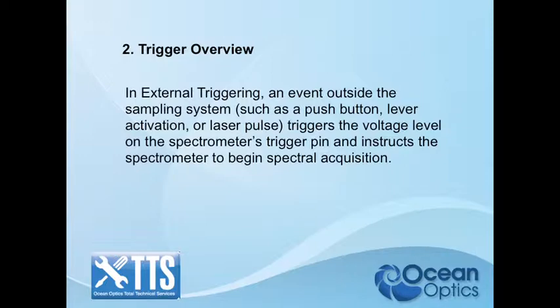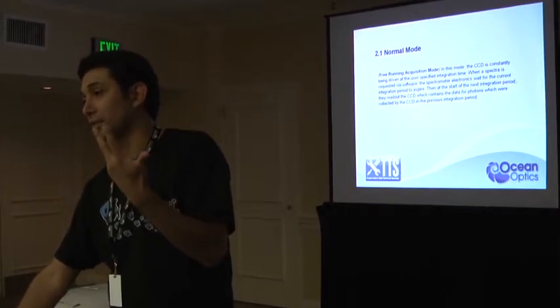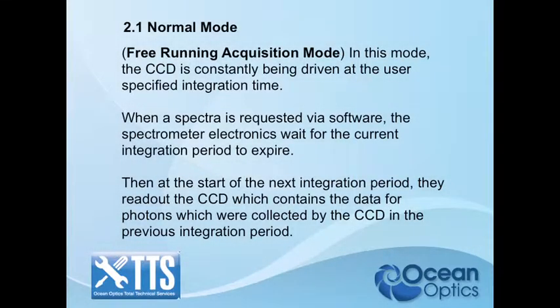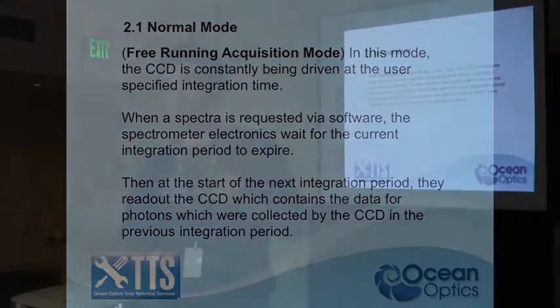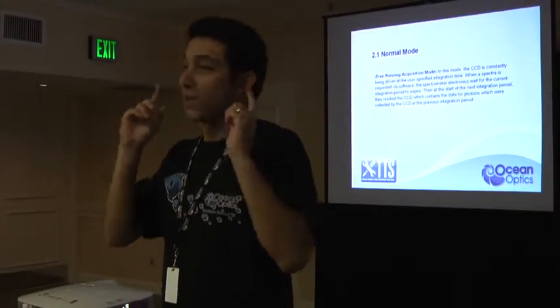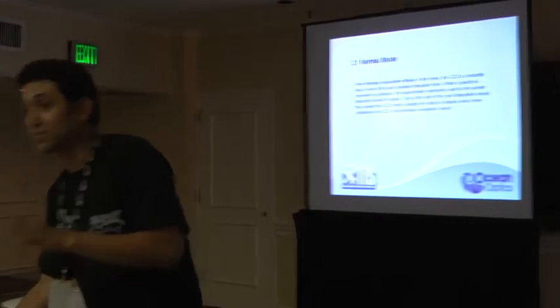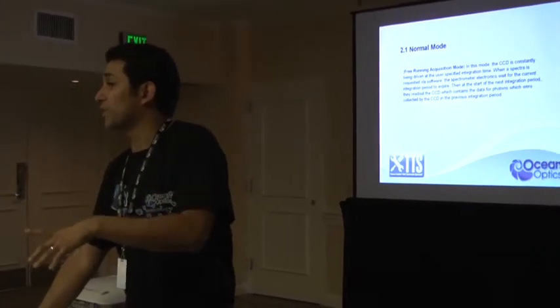We have normal mode, software trigger mode, external hardware trigger, external synchronization trigger, and external quasi trigger mode. Normal mode is when you plug a spectrometer and open the spectrometer suite — the spectrometer is just running in the background, acquiring spectra freely. We call it free running mode. If you have a five-second integration time, it's going to acquire and give you a new acquisition every five seconds.